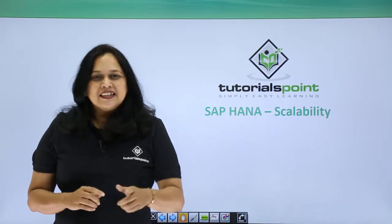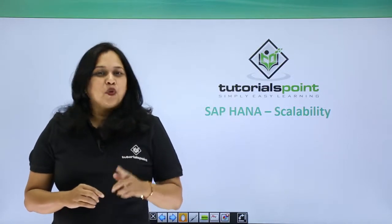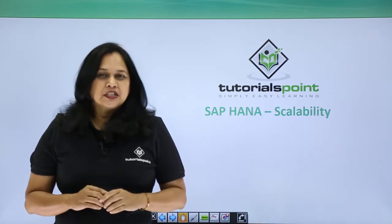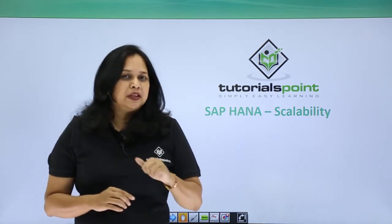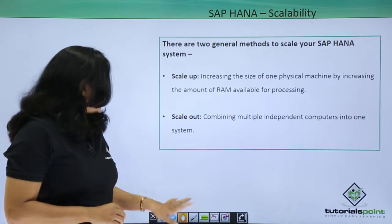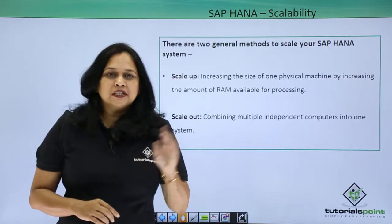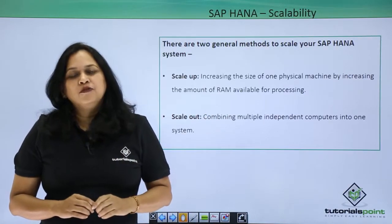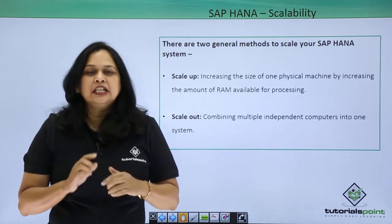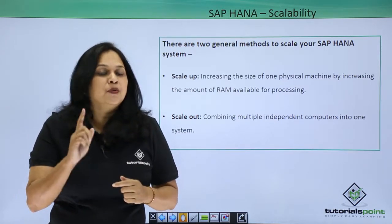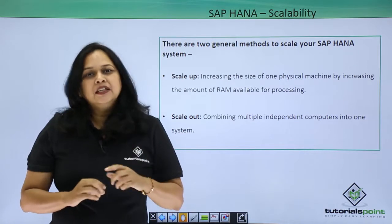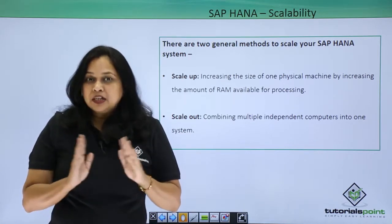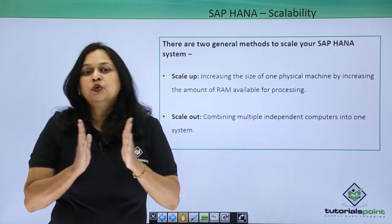Let us understand what is scalability. To perform SAP HANA system scaling there are two common methods. First, scale up — meaning increasing the size of one physical machine by increasing the amount of RAM available for processing. The other is scale out — meaning combining multiple independent computers into one system.